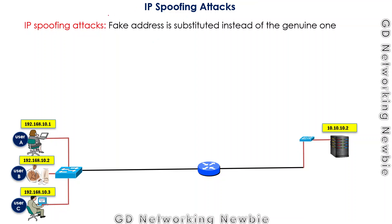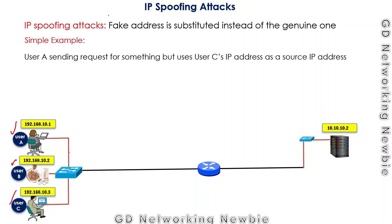For understanding, let's suppose we have three users: user A, user B, and user C. For example, user A has the IP address 192.168.10.1, and this user wants to send a request for some information from another computer — maybe a machine offering web services or any services.